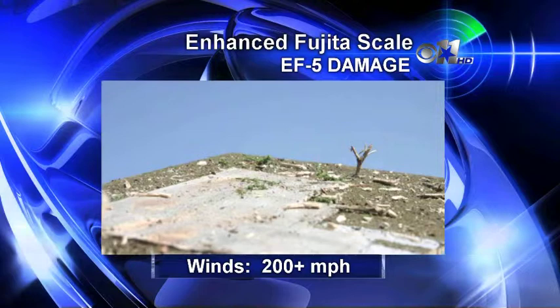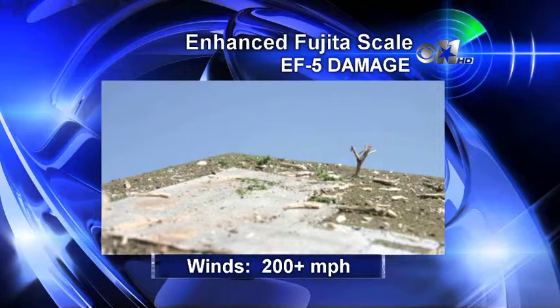An EF5 tornado, like some of the ones we saw up in Oklahoma — all that would be left is basically a slab of concrete. Those are obviously the most devastating tornadoes, and wind estimates are above 200 miles per hour. That's the scale we use, and it's based off the damage that a tornado creates.